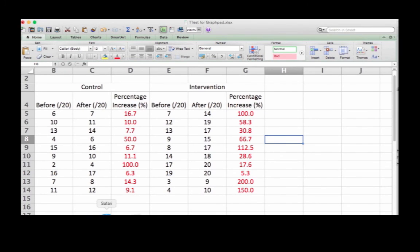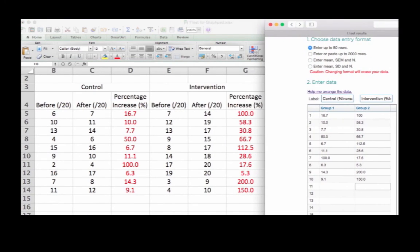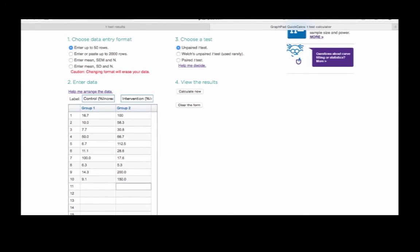Following the same method, using GraphPad we enter the data for percentage increase for both the control and the intervention into the two columns. Once we've checked we've entered it correctly, this is again an unpaired t-test for two independent groups, then we hit calculate now.